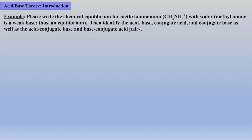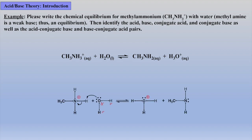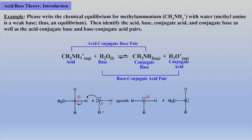In the next example, we are again asked to write the equilibrium and label the various reactants and products. But here it may help to visualize the two-dimensional Lewis structure of the protonated methylamine. Here we see that in the forward direction, methyl ammonium is a proton donor, and in the reverse direction, the neutral methylamine acts like a weak base establishing an equilibrium.